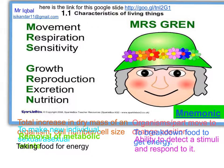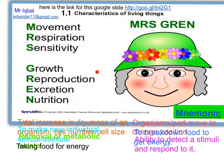Hey guys, this is Iqbal. Biology is the study of living things, and all living organisms have some basic characteristics which describe them as living things. There are seven basic characteristics of life: movement, respiration, sensitivity, growth, reproduction, excretion, and nutrition.